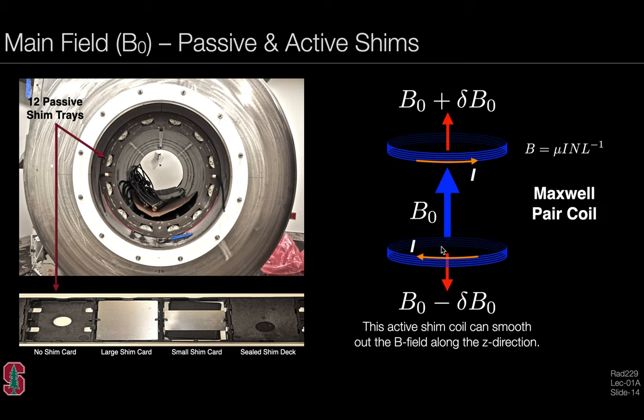Once the system's been installed, it's also possible to perform active shimming to help smooth out the B field along, for example, the Z direction. Here we show a Maxwell pair coil winding at the head and foot of the scanner. By adjusting small amounts of current, we can steer the magnetic field linearity to perhaps improve the overall field homogeneity.